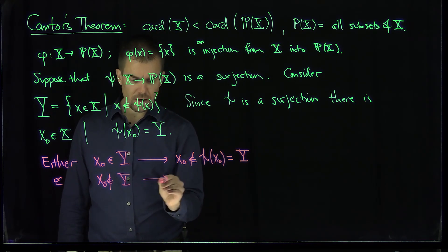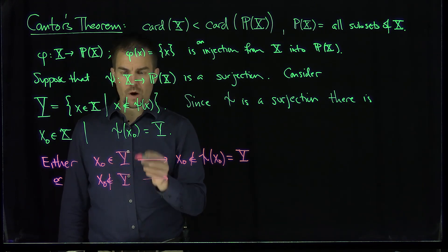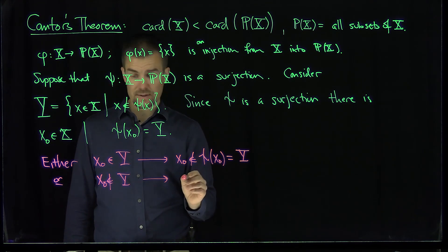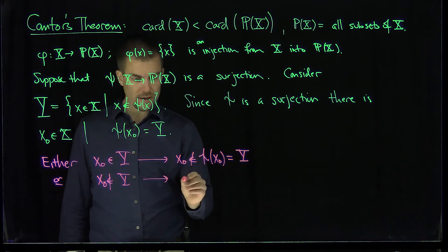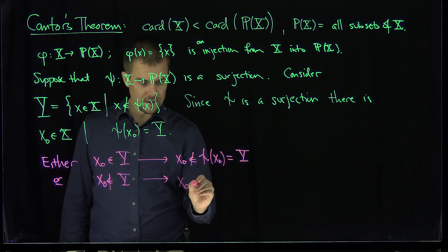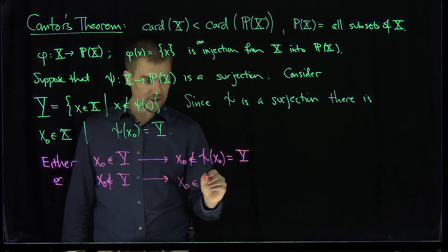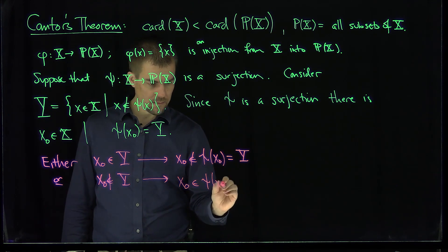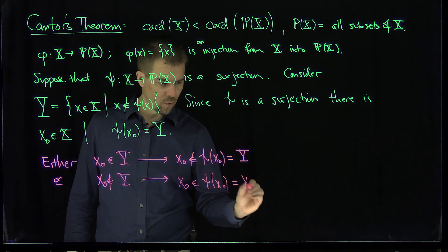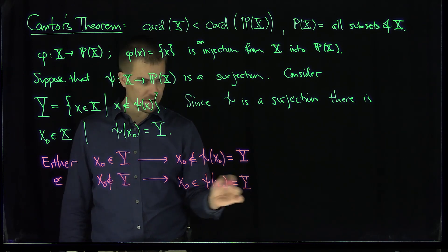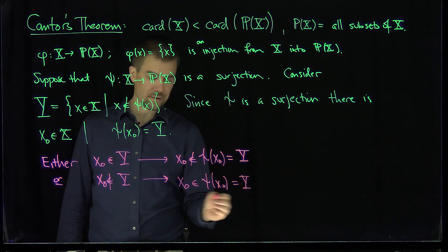And over here, if X0 is not in Y, then what does that say? That says X0 is not in that set. So X0 is in Psi of X0, which is equal to Y. So if X0 is not in Y, then X0 is in Y. In either case, we have a contradiction.